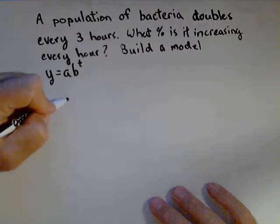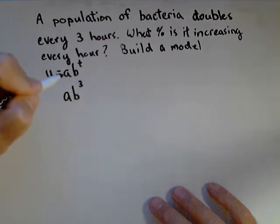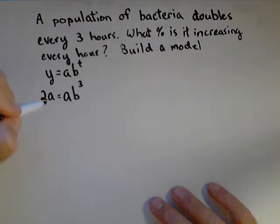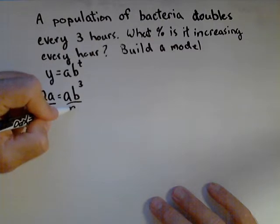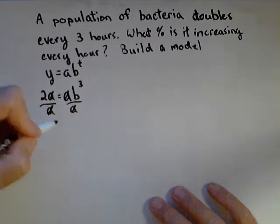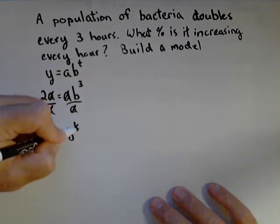So if our initial amount is A, we know that after three hours that we should have double our initial amount. So we should have 2A. So even though we didn't know the initial amount, we can actually solve this, because notice now I can divide both sides by A, and those cancel. And I get two equals B to the one-third...